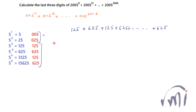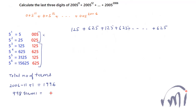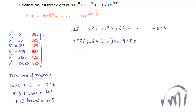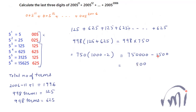So how many total terms will there be? Total number of terms will be 2006 minus 11 plus 1, which equals 1996. Out of these, 998 terms will have value 125 and 998 terms will have 625 as their last three digits. That means the value of this sum will be 998 multiplied by (125 plus 625), which equals 998 multiplied by 750. This can be written as 750 multiplied by (1000 minus 2), which is 750,000 minus 1500, giving us 748,500.